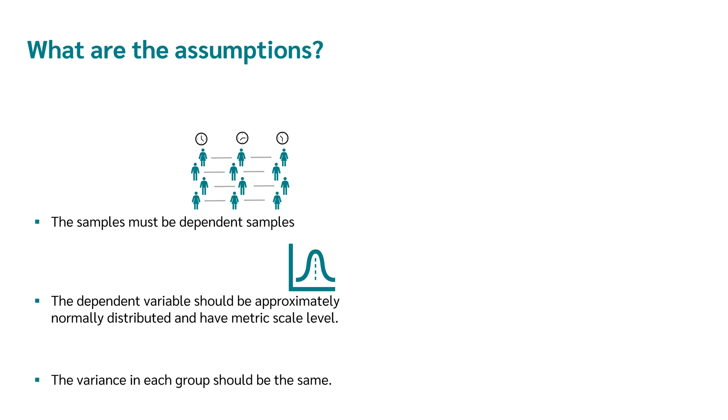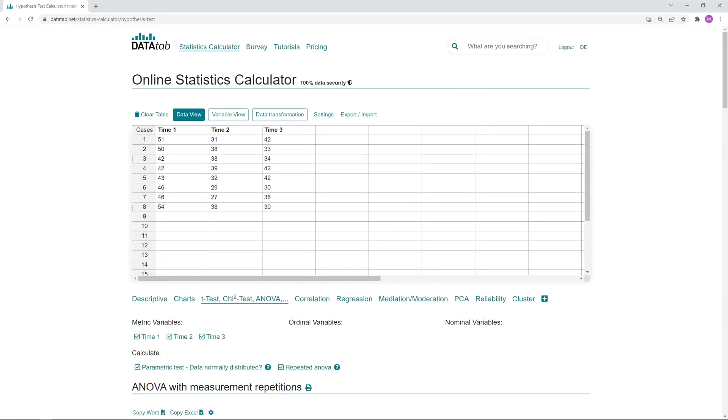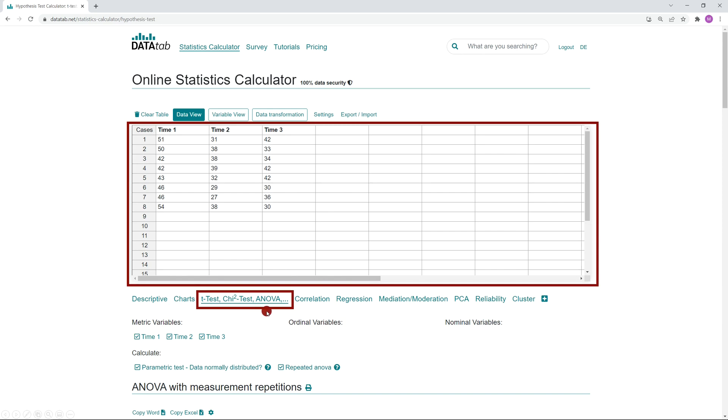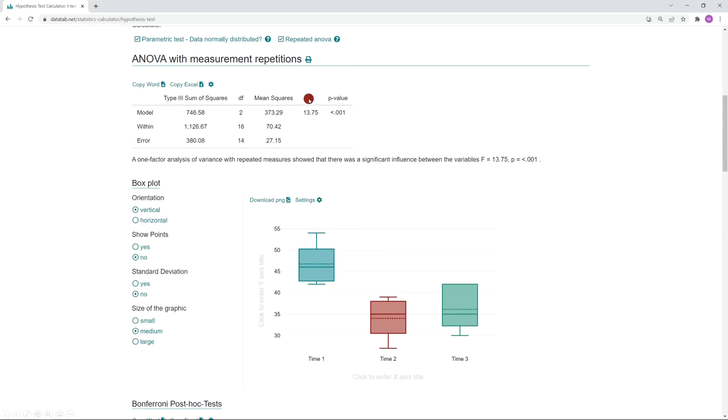Now I will show you how you can easily calculate an analysis of variance with repeated measures online. Just visit the statistics calculator on datadab.net and copy your own data into the table here. Then you click on this tab. Now I just have to select your variables. If you select three or more metric variables, an analysis of variance with repeated measures will be calculated automatically. And you get the results.